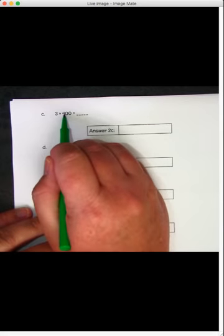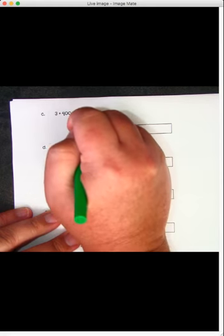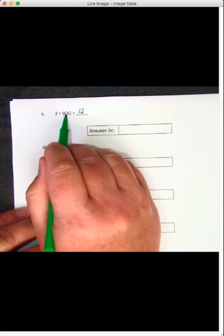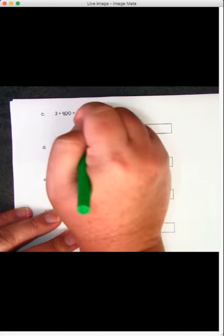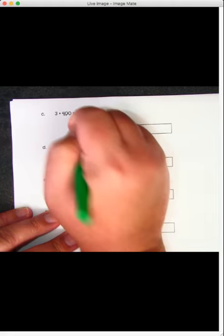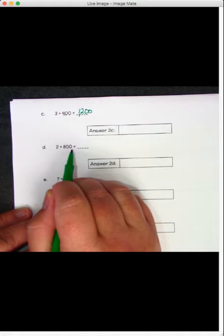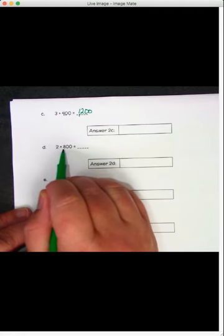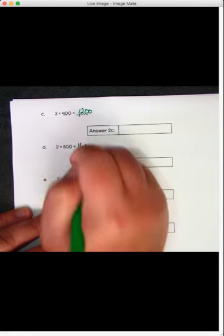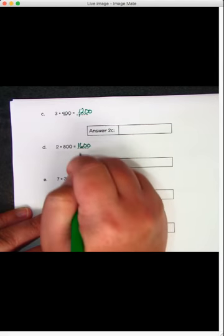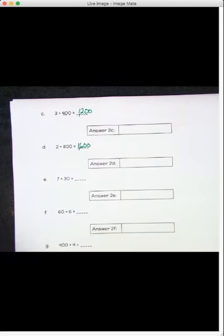What's 3 times 4? 3 times 4 is 12. How many 0s do we add? 1, 2. The answer is 1,200. 2 times 800. 2 times 8 is 16. We're adding 1, 2, 0s. 1, 2. The answer is 1,600.